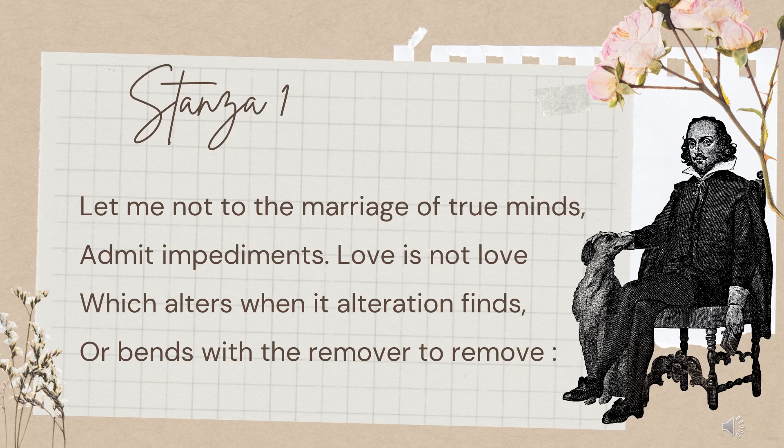'Or bends with the remover to remove' — 'bends' means to bow down or deviate. This follows the same thought as 'admit impediments' from the second line. 'Deviate' means to stray from one's path. 'Remover' means one who removes or takes away. If someone is trying to remove that love and it gets removed — if it bends with the remover to remove — then that is not true love, according to William Shakespeare.